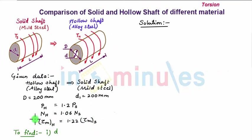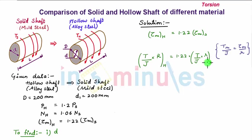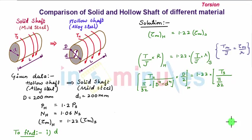Now using the maximum shear stress condition: τ_max(H) = 1.22 × τ_max(S). From the torsion formula T/J = τ/R, so τ_max = T·R/J. Substituting for the hollow and solid shafts: [T_H / (π/32 × (D⁴ − d⁴))] × (D/2) = 1.22 × [T_S / (π/32 × D1⁴)] × (D1/2).